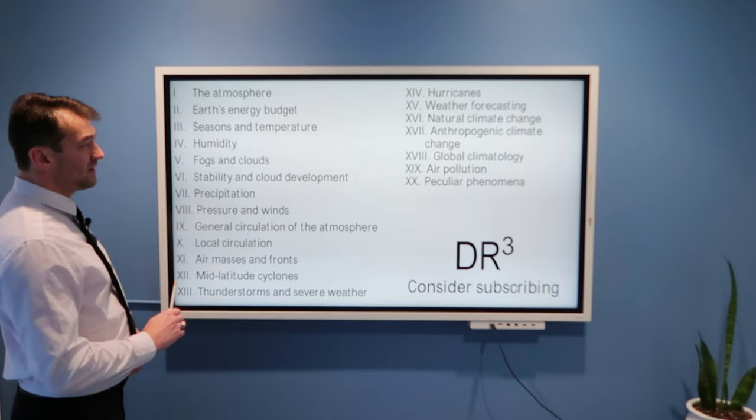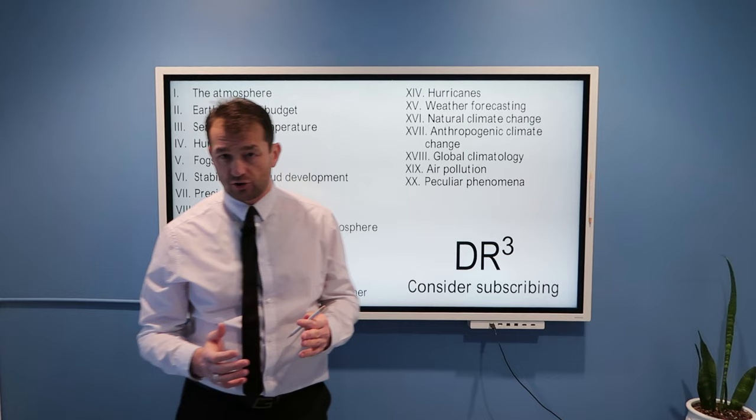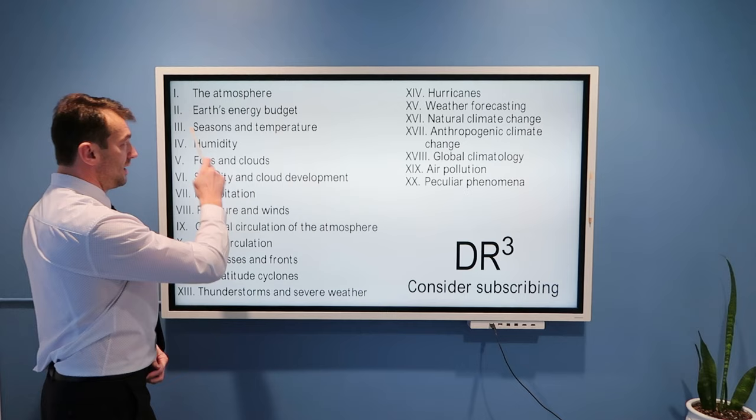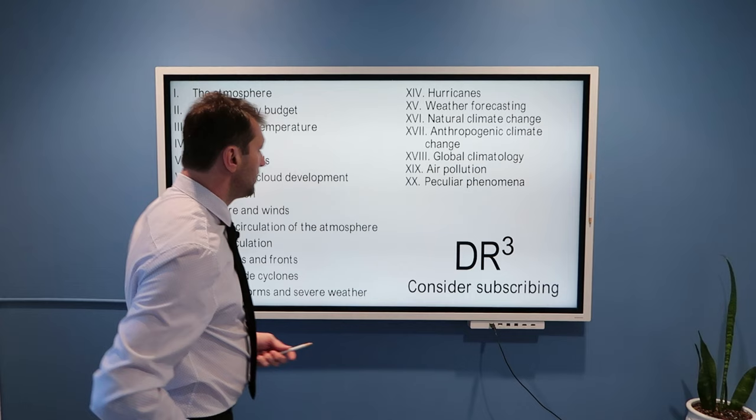So to conclude, I basically outline here 20 chapters that we will have. I will start in next video by talking about the atmosphere. What is the composition of the atmosphere? How atmosphere formed? And what are the typical layers in the atmosphere? Then Earth's energy budget. Where is the energy coming from? And how is it distributed? Then we will talk about seasons and temperature variations on this planet.